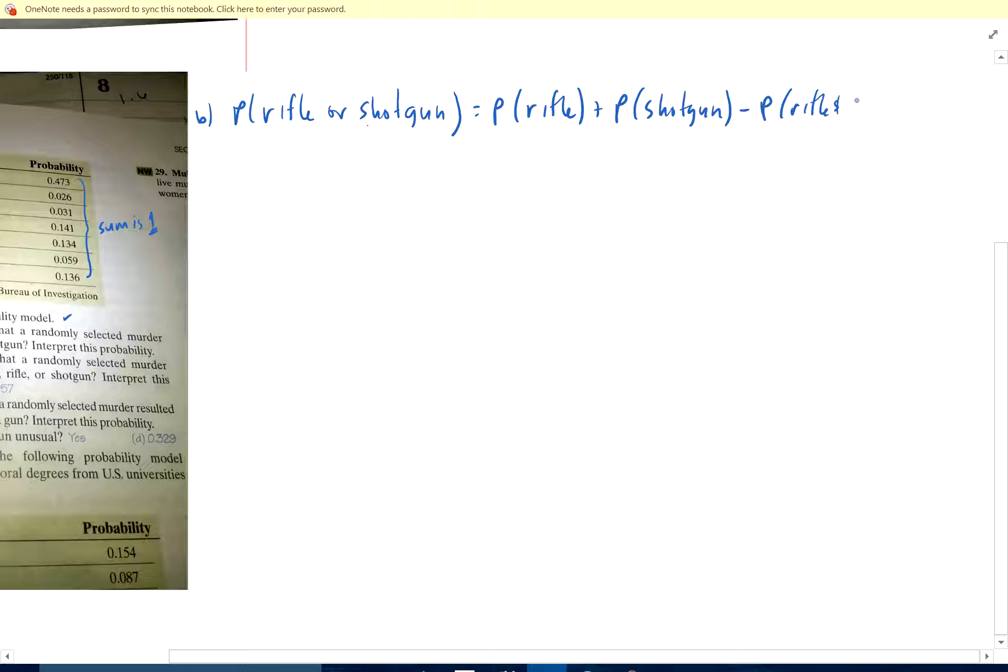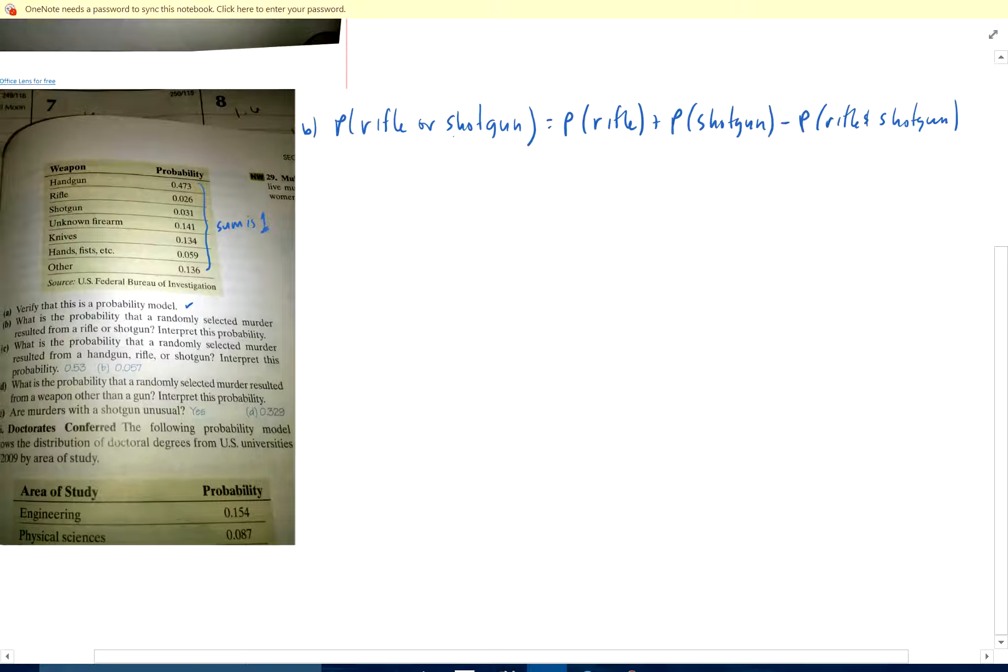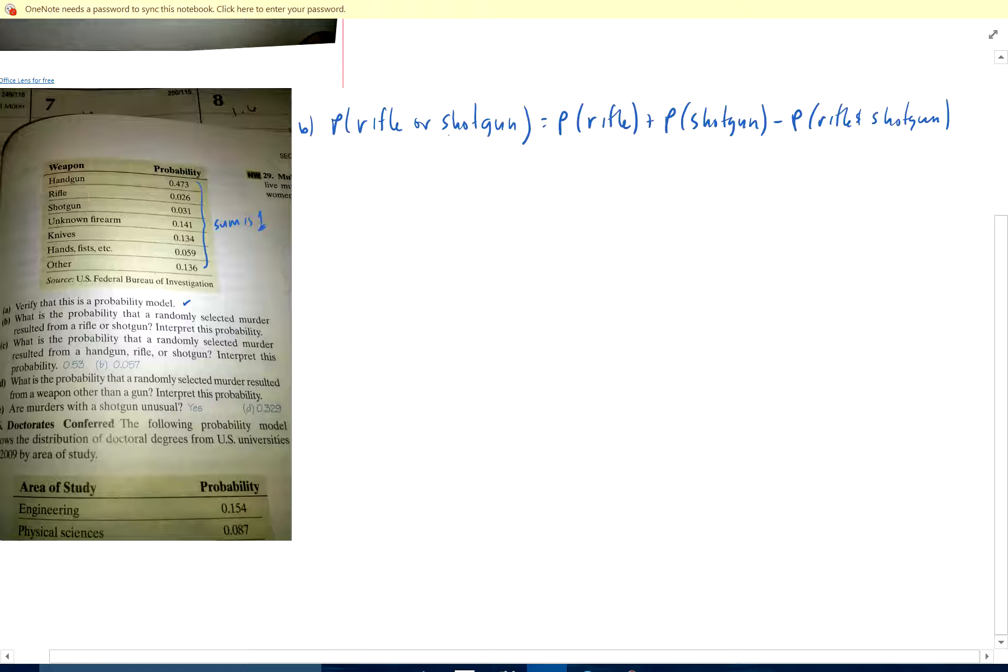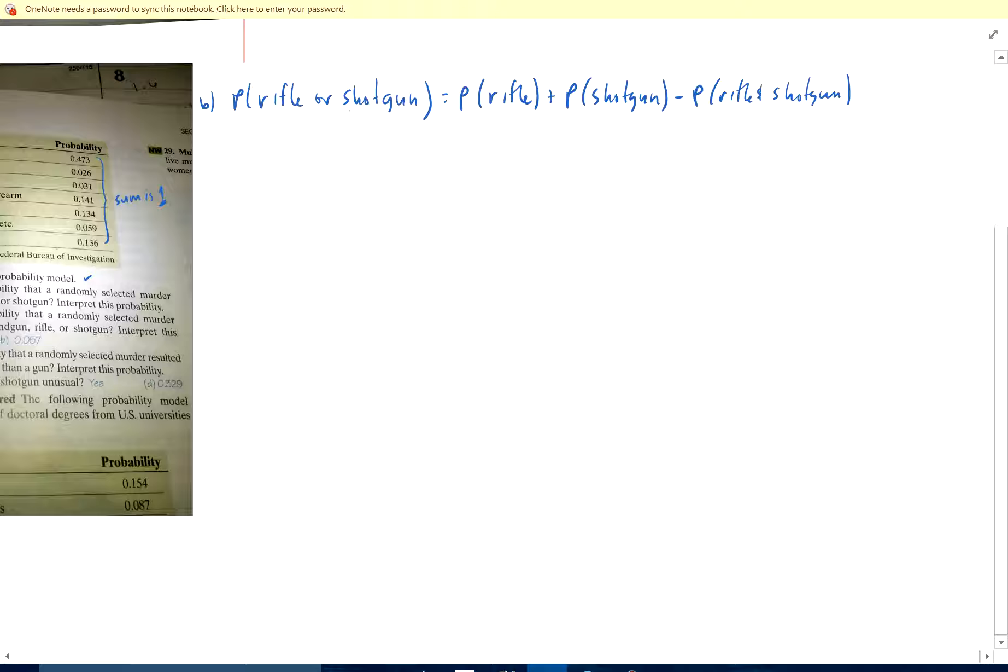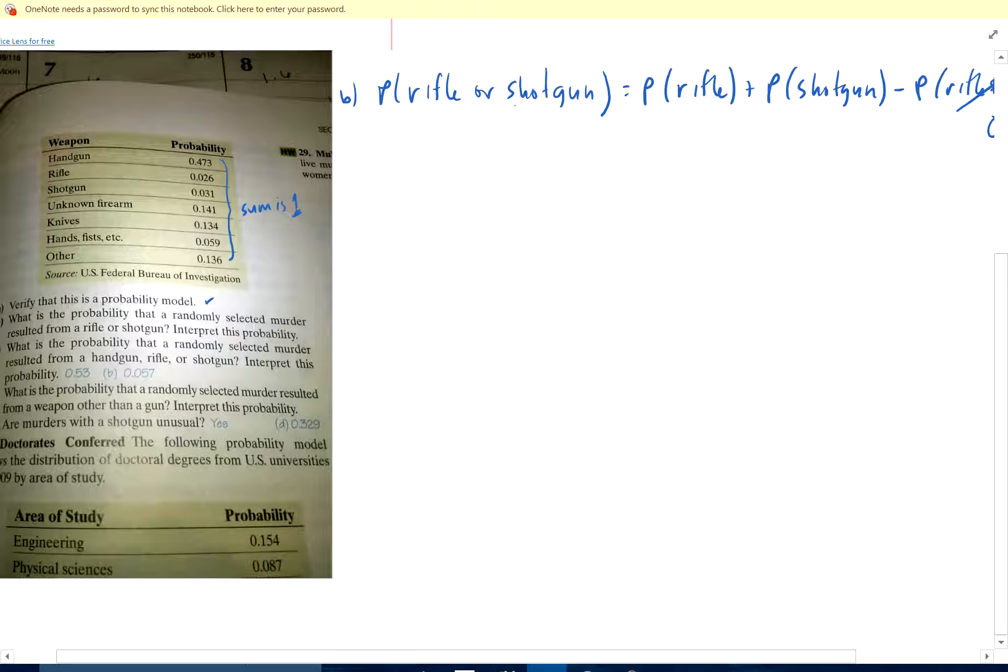Can we do both a rifle and a shotgun? Well, the answer's no. I mean, I suppose you could if you had one in each arm, but we're counting these as two separate categories here, so that would be no. So this is going to be a rifle is 0.026 plus a shotgun is 0.031, so that would be 7.50, so 5.7%.